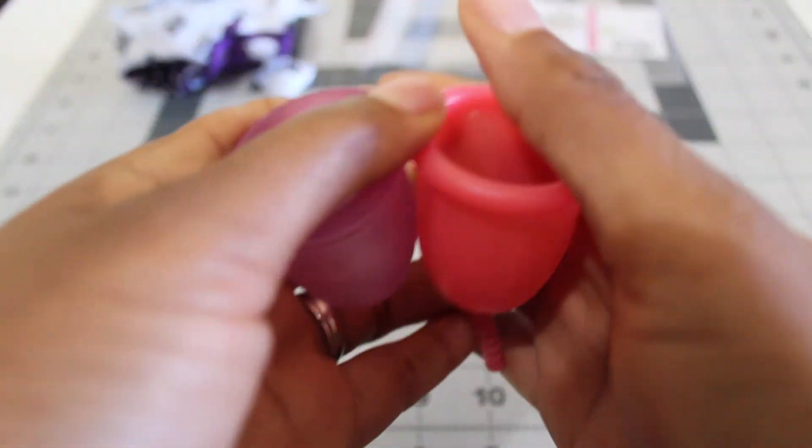So now I'm going to compare the firmness. I'll look at the bodies first and then the rims.